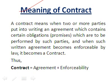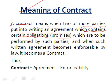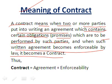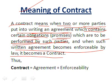First, the meaning of contract. A contract means when two or more parties put into writing an agreement which contains certain obligations and promises which are to be performed by such parties, and when such written agreement becomes enforceable by law, it becomes a contract. Enforceable means it creates legal obligations — the written agreement is binding by law. So, contract equals agreement plus enforceability.